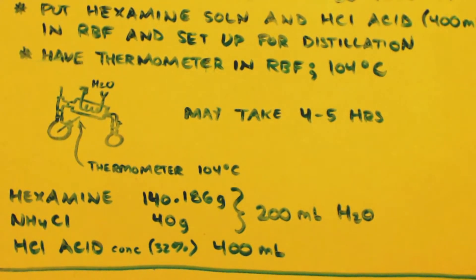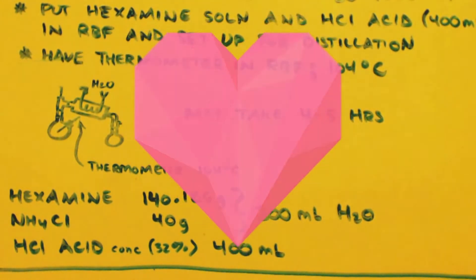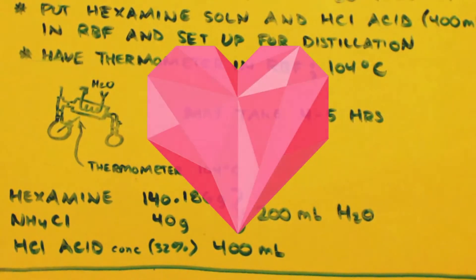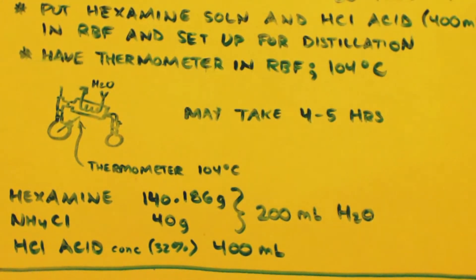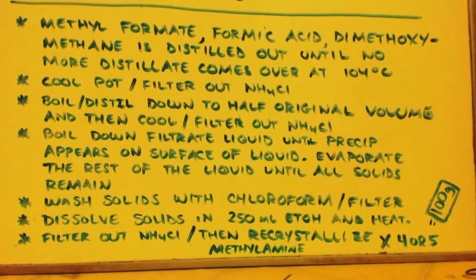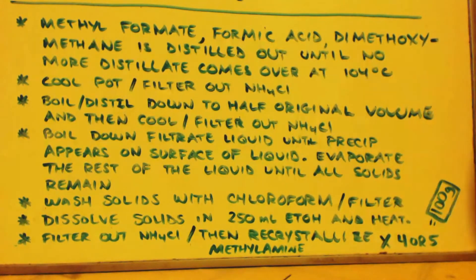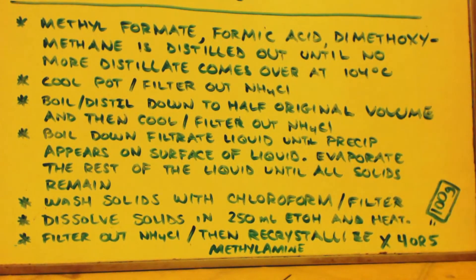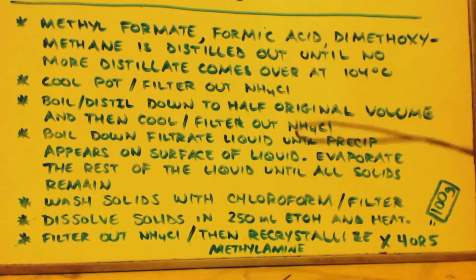Heat it up to 104°C until nothing else distills over. During that time you're going to distill out some methyl formate, formic acid, and methoxy methane. Keep distilling until no more distillate comes over at 104°C.